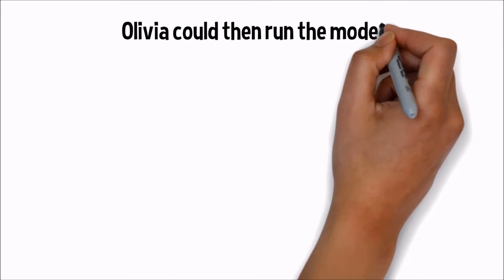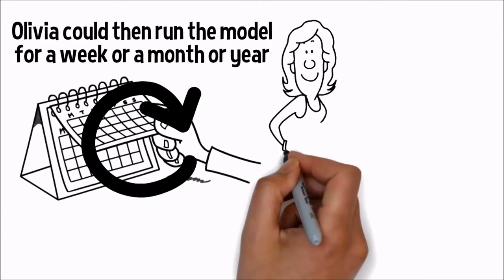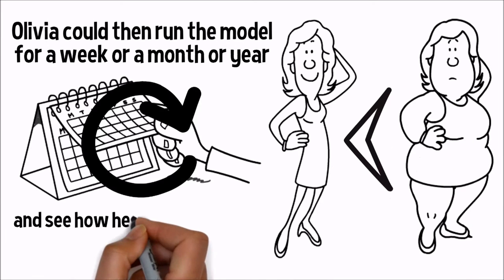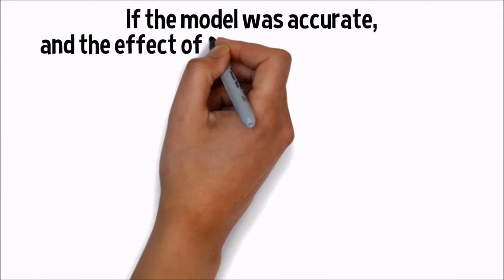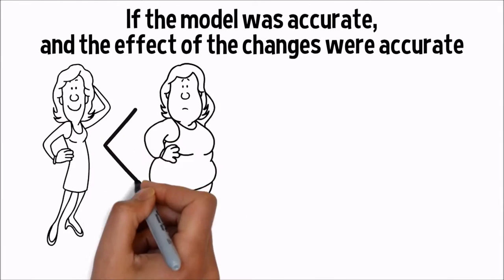Olivia could then run the model for a week or a month or a year and see how her body would react by adjusting those variables. If the model was accurate and the effect of the changes were accurate,